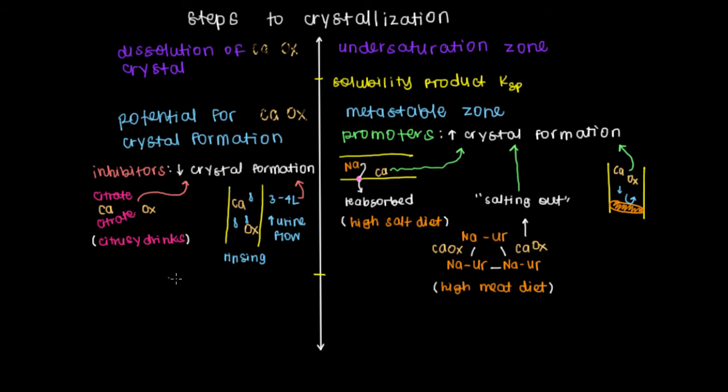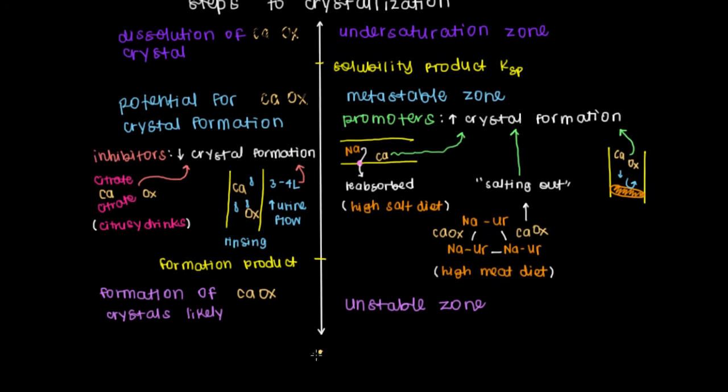But let's say despite our best efforts, we pass this threshold here that's marked by a number that's known as the formation product. And this is similar to the solubility product above, but this marks a threshold beyond which formation of these calcium oxalate crystals are likely. And some refer to this zone, if we're going to go with the same type of terminology as above, this zone as the unstable zone. And so at this point, our calcium oxalate crystal will finally form. And so let's scroll down and focus on this little guy right here.